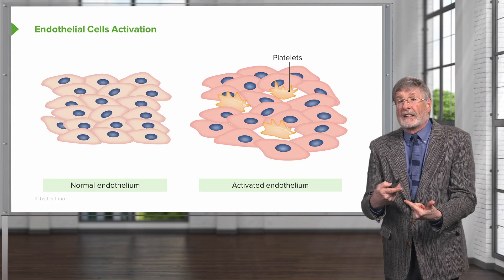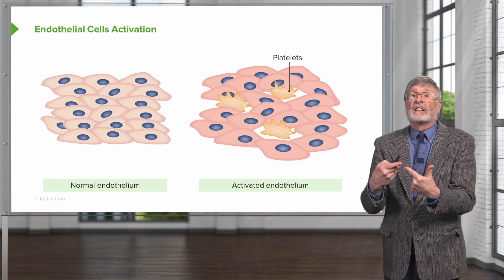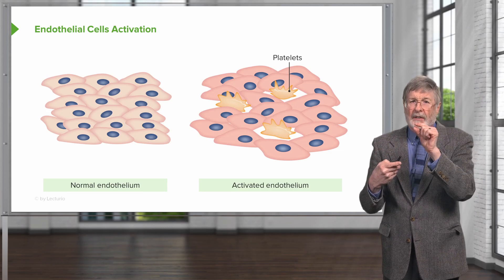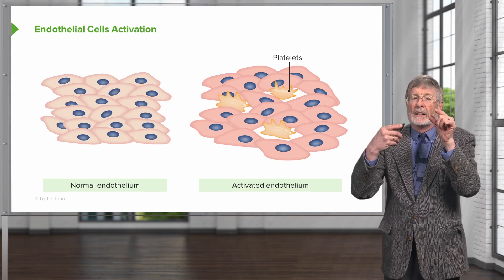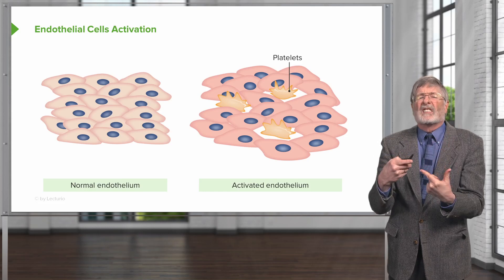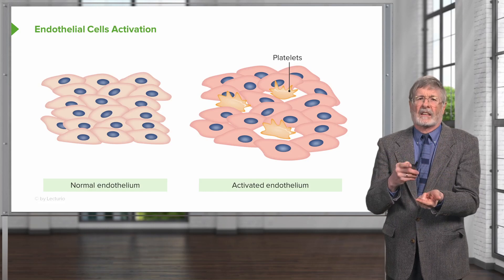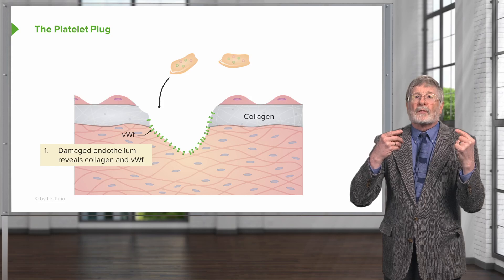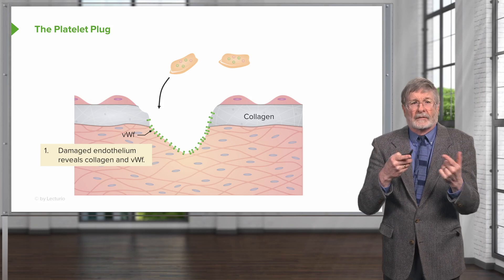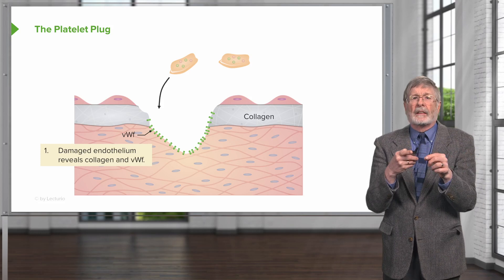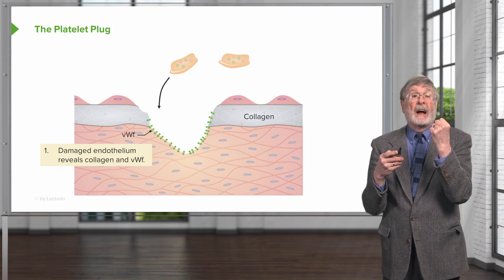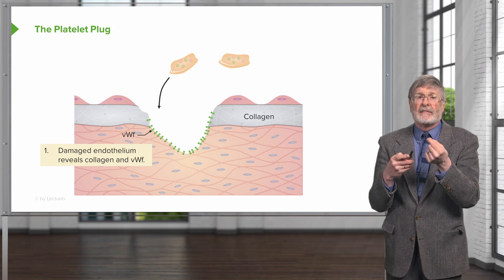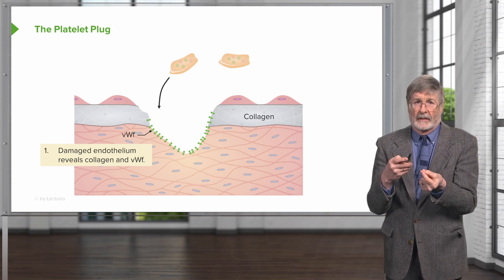Once we have the activation of the endothelium, we then begin to recruit the platelets, and you can see them binding now to the underlying endothelial surface. Damaged endothelium, where we've lost it or it's become activated, reveals underlying collagen and von Willebrand factor.